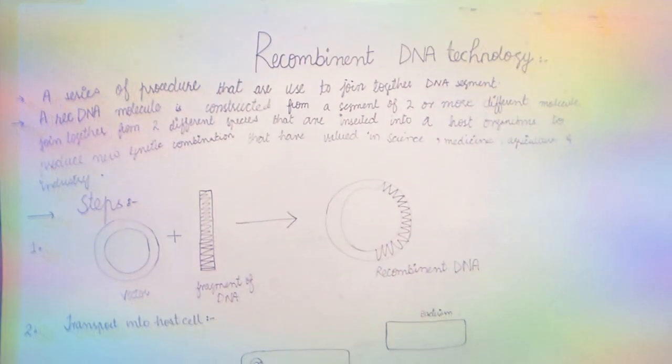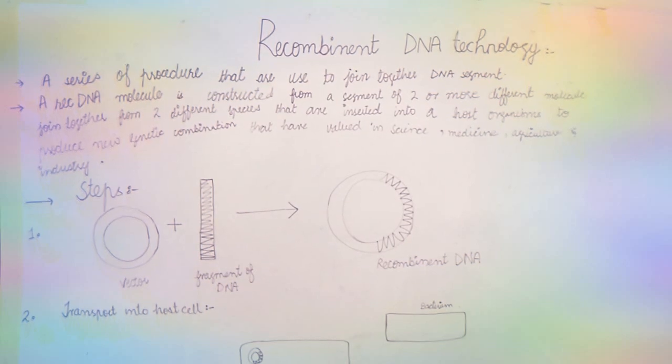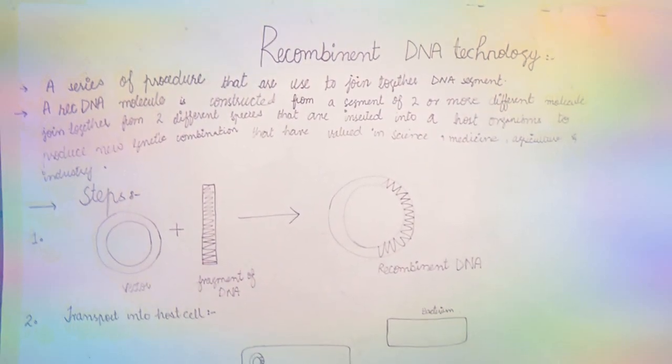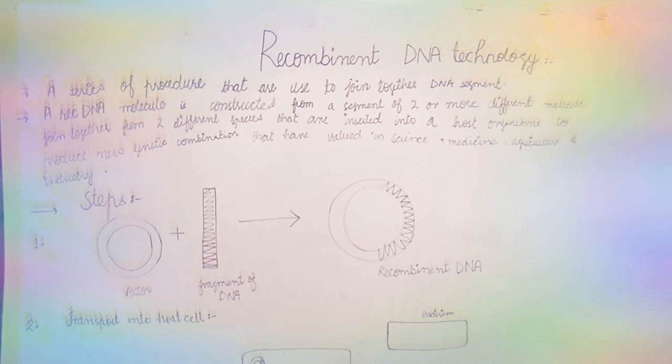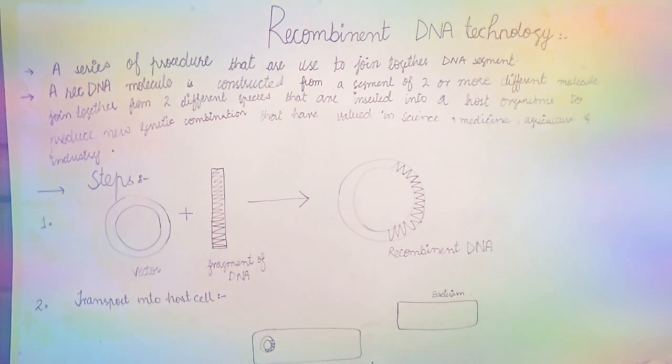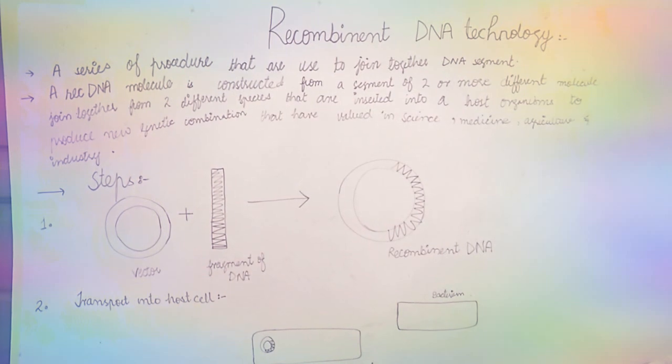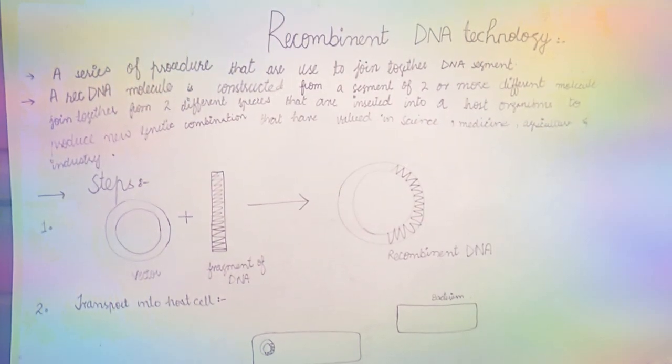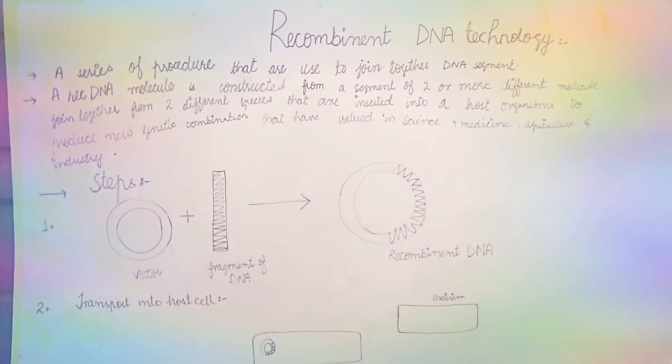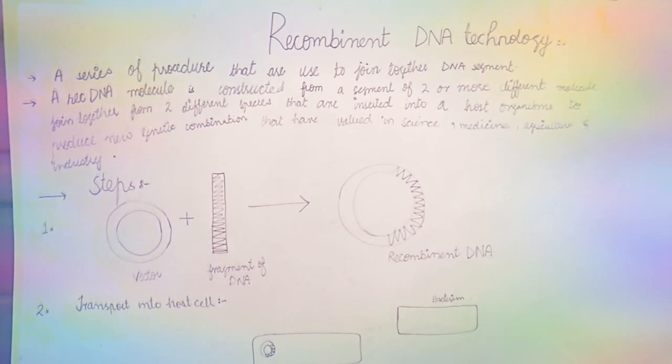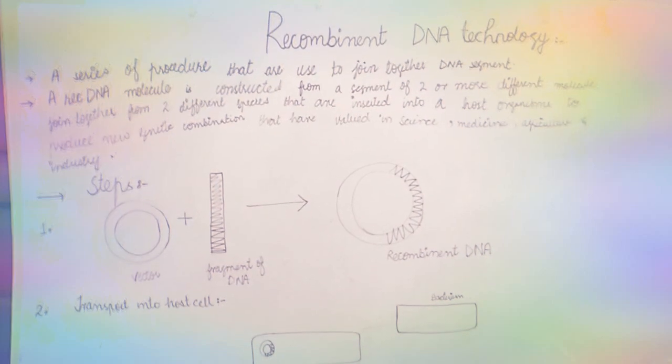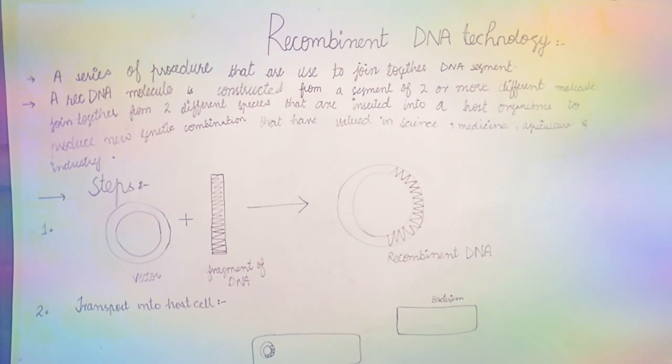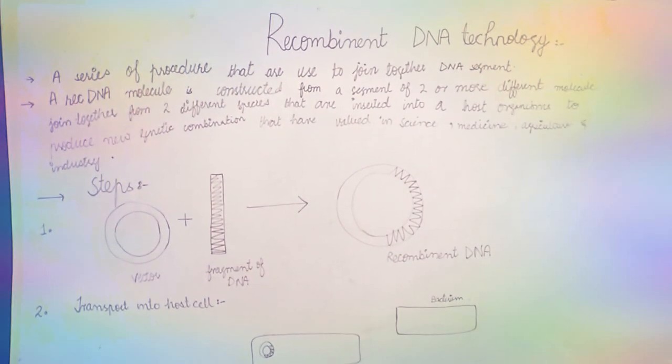There are steps of recombinant DNA technology. In the first step, we isolate the fragment or segment of DNA. Cloning vectors are basically self-duplicating DNA molecules in which the segment of DNA is inserted and further copies are made. Vectors can be plasmids or bacteria. We insert the segment of DNA into this vector through ligase enzyme, resulting in the formation of recombinant DNA.